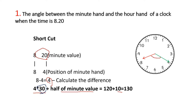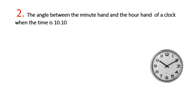We multiply 30 by half of the minute value. This is a very simple shortcut. The formula is: multiply 30 by the hour difference, then apply half of the minute value. So the first step is: 30 multiplied by half of the minute value.